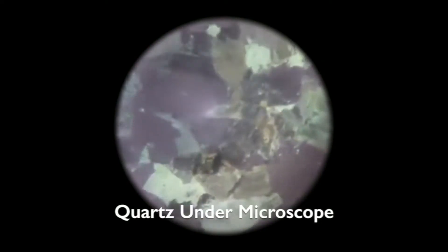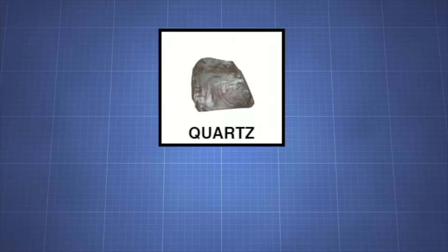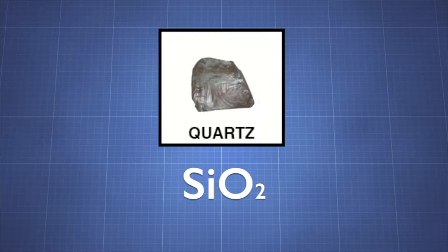To be considered a mineral, a substance must have a fixed chemical formula and be made from a combination of specific elements. The mineral quartz is formed from the bonding of the elements silicon and oxygen. It has a fixed chemical formula of one atom of silicon and two atoms of oxygen.